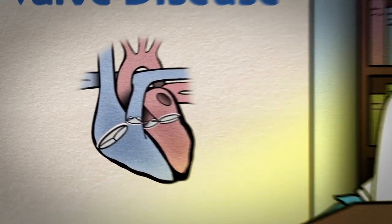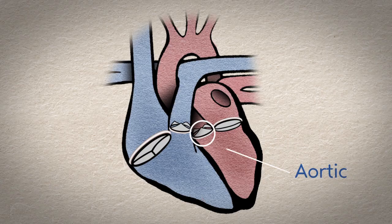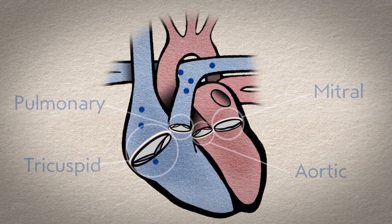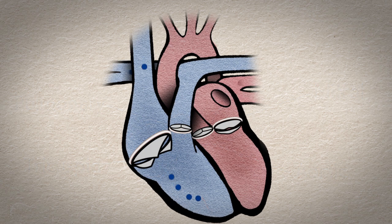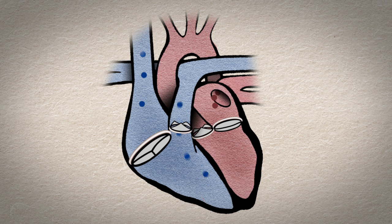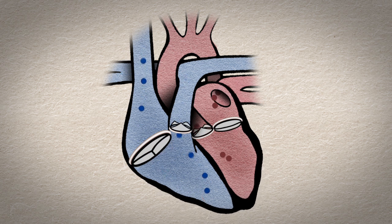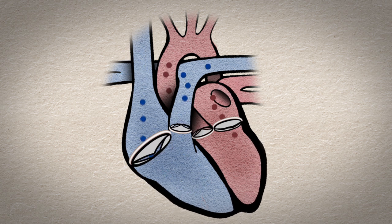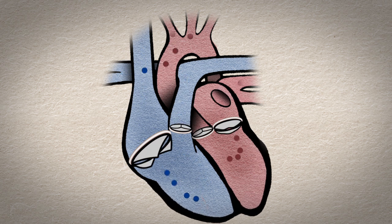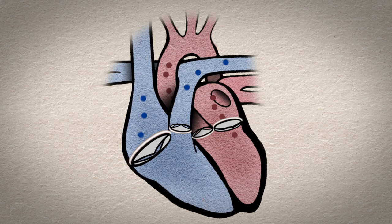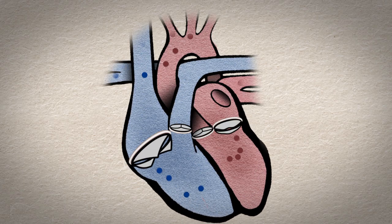The heart has four valves: aortic, mitral, tricuspid, and pulmonary. These valves are designed to open and close every time your heart beats. When they are working like they should, your heart valves ensure that your body is getting the oxygen-rich blood that it needs.